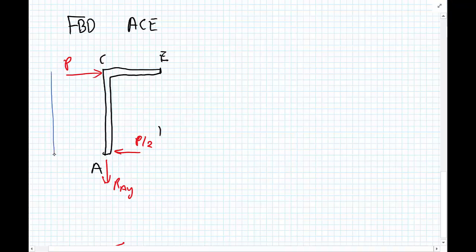Finally, just to complete the free body diagram, we need to put some dimensions. So we have the height H and we have this distance between C and E which is L upon 2.